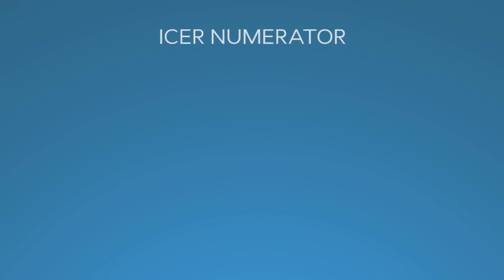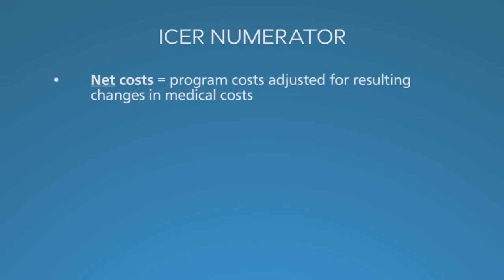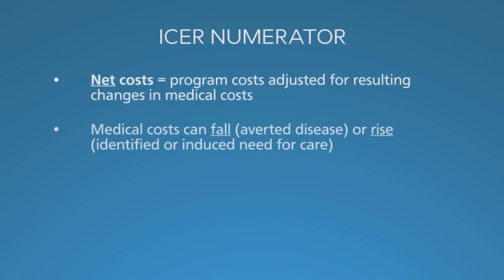The ICER numerator is the net costs, and that's different from the costs of implementation. Net cost is program costs adjusted for the resulting changes in medical costs. Medical costs can fall if you avert disease — with a prevention strategy such as vaccination or HIV prevention through needle exchange. If you avert disease, you save the cost of treating that disease.